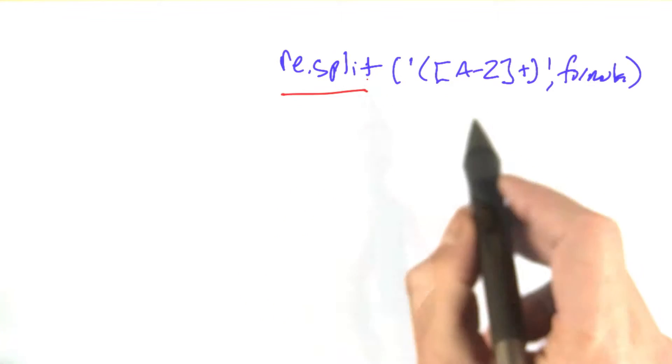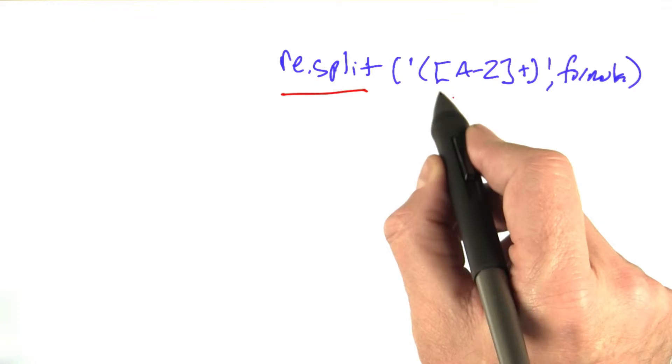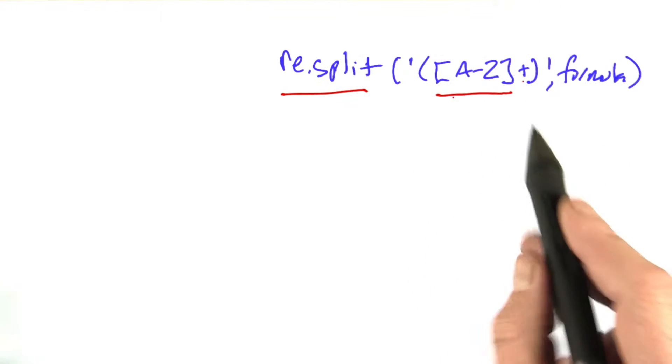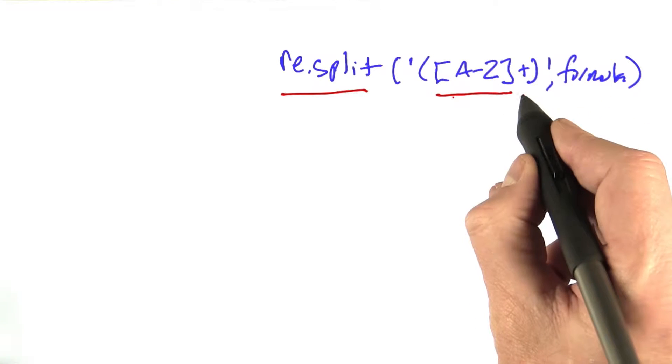This says I want to split up the original formula, and the way I'm splitting it up is I'm taking sequences of the characters A to Z in a row. The plus means one or more,